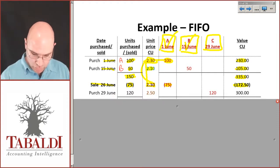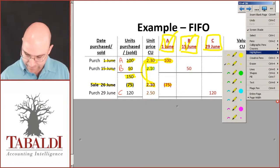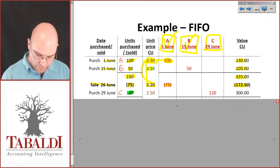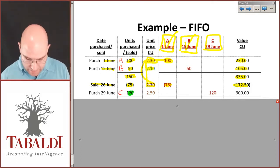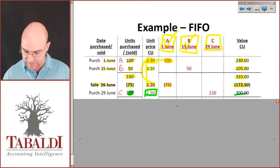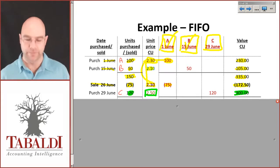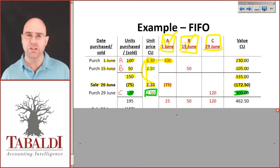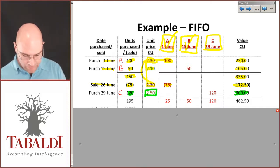Then I have another purchase, and let's call this purchase C, on the 29th of June for 120. So I purchased 120 items and this purchase price was 2.5, and the total value added to inventory then is 300, 120 times 2.5. I don't have to worry about averaging costs here.